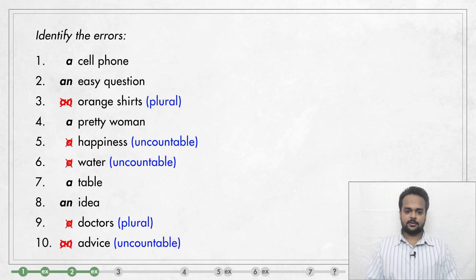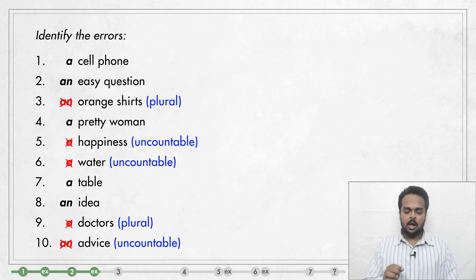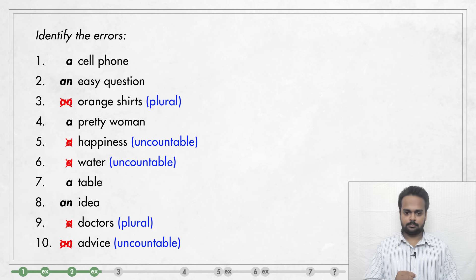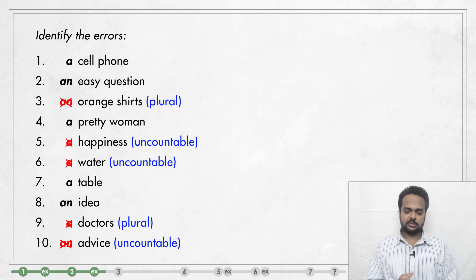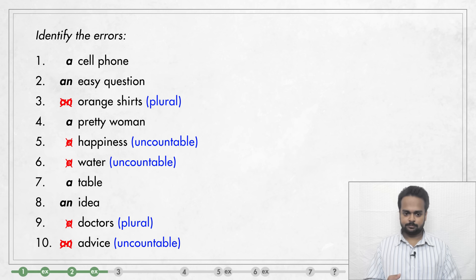OK, here are the answers. Number three is wrong because 'shirts' is a plural and you cannot use A or AN before a plural noun. Number five is wrong because 'happiness' is uncountable, so A or AN cannot be used there. The same goes for number six — water is uncountable. Number nine is wrong because 'doctors' is a plural; you can say 'a doctor' but not 'a doctors.' And finally in number ten, 'advice' is an uncountable noun, so you cannot ask for 'AN advice.'